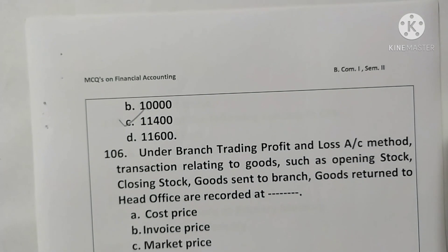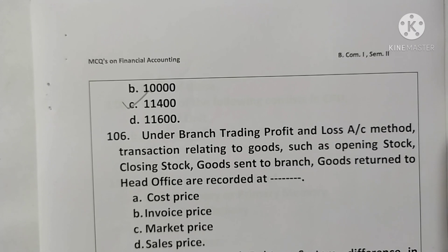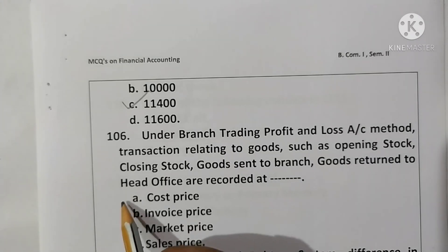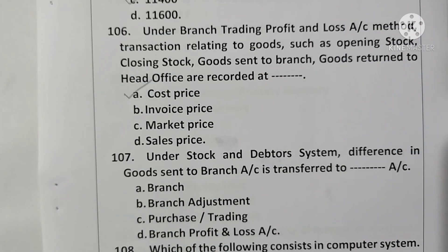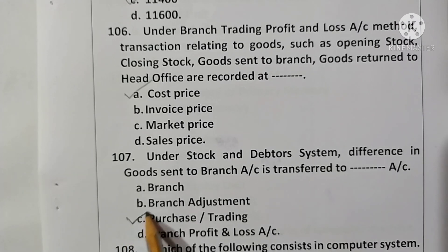Question 106: Under the branch trading and profit and loss account, transactions related to goods — opening stock, closing stock, goods sent to branch, goods returned to head office — are recorded at cost price. Option A is correct. Question 107: Under the stock and debtor system, the difference in the goods sent to branch account is transferred to the purchases or trading account. Option C is correct.